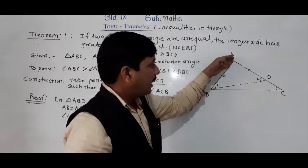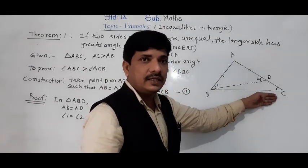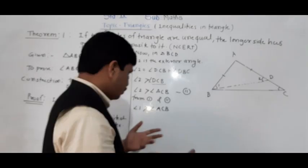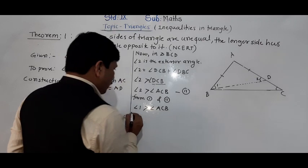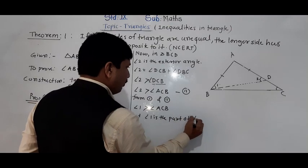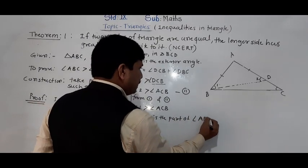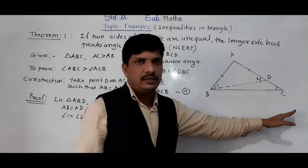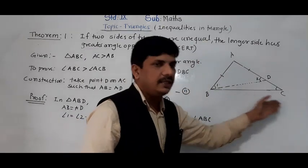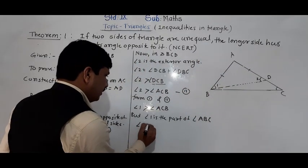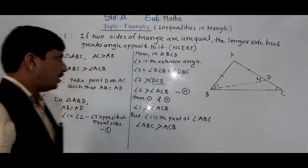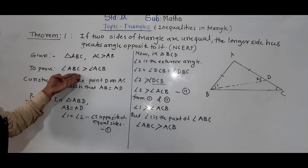Therefore angle ABC is greater than angle ACD, because angle 1 is part of angle ABC, and the whole is always greater than the part. So angle ABC is greater than angle ACB — that is our target, and hence the proof is complete.